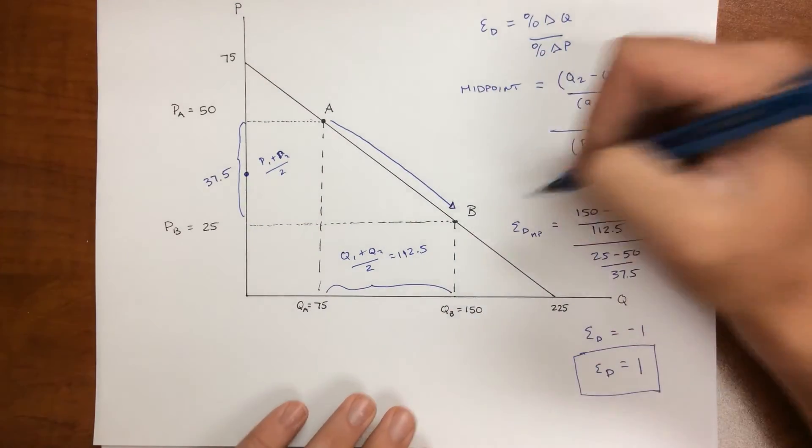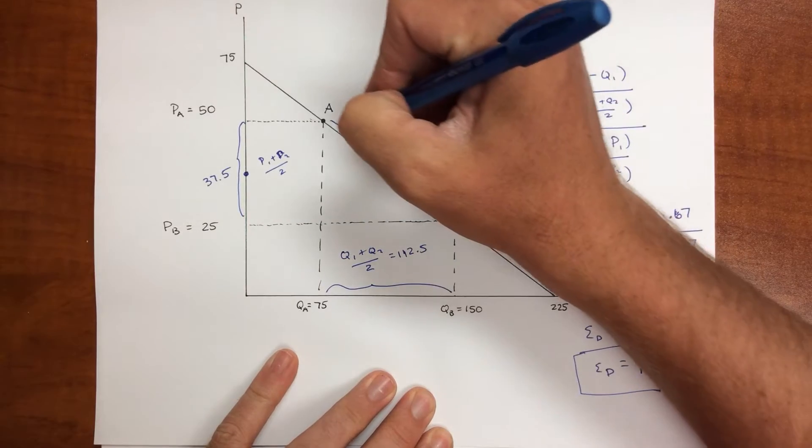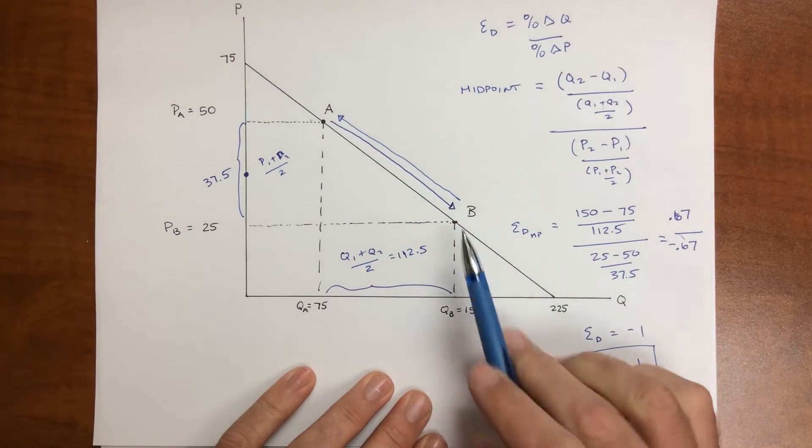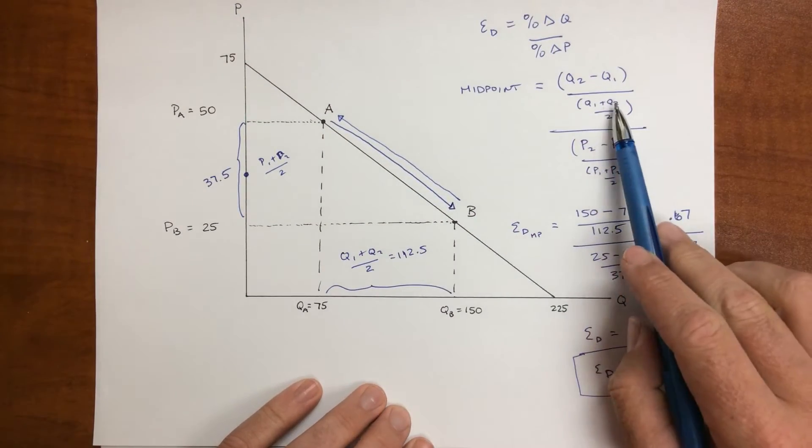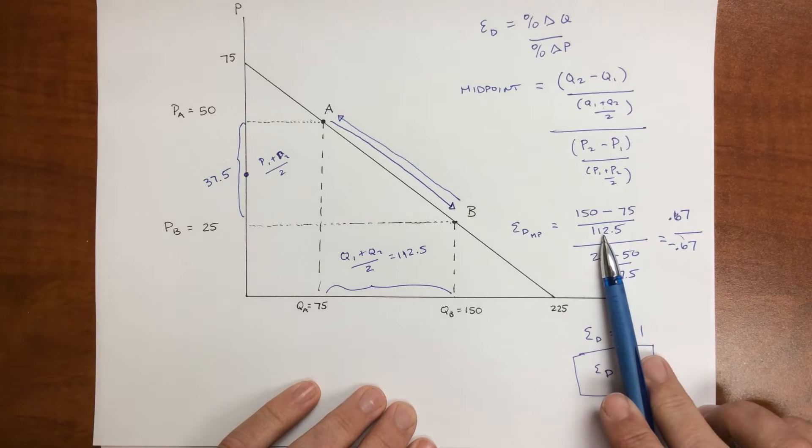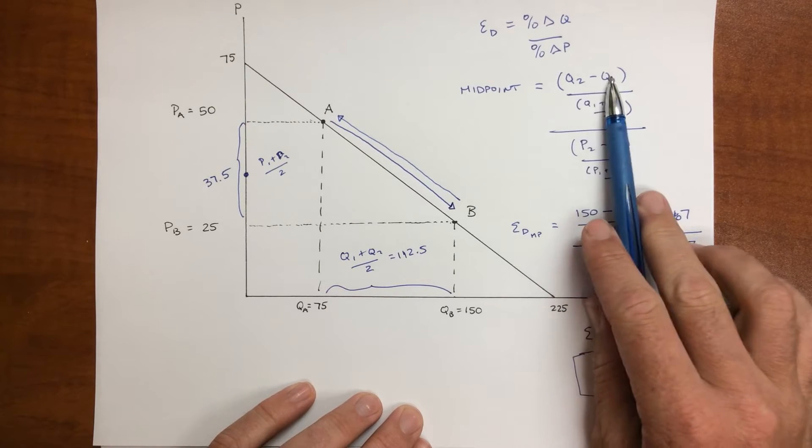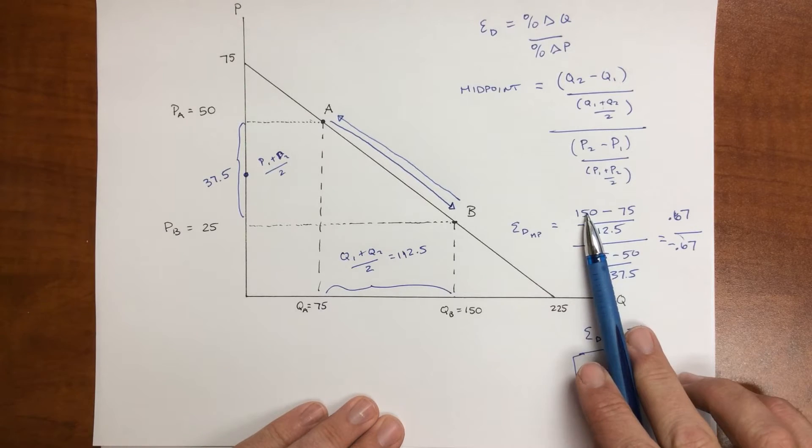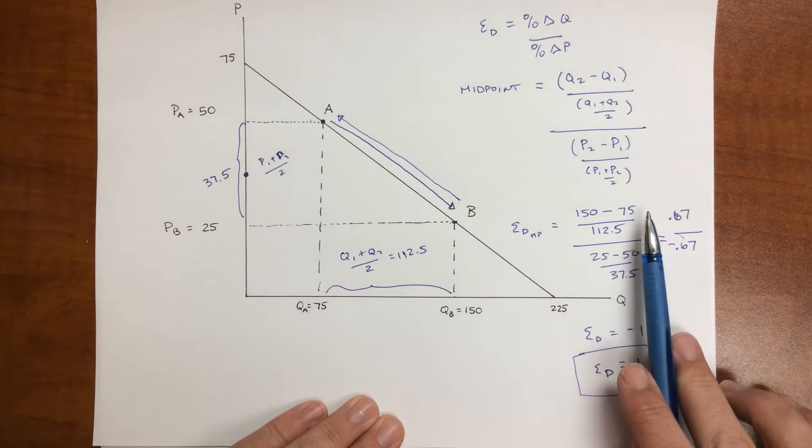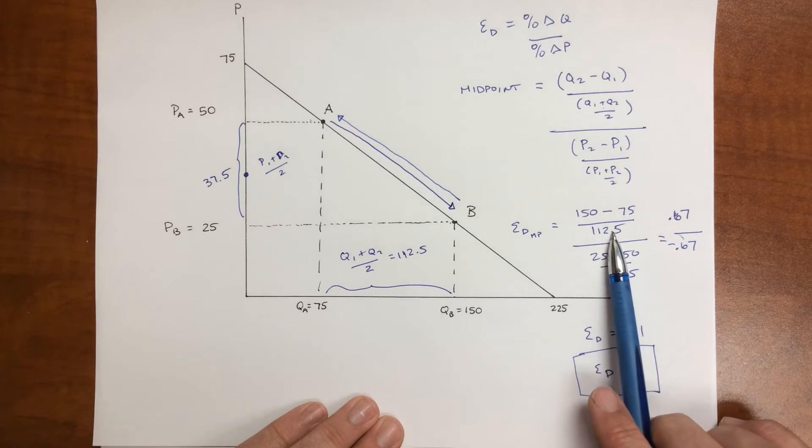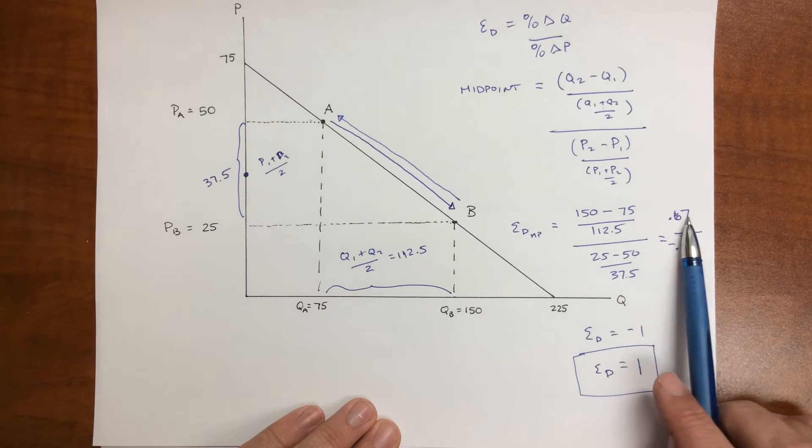Now if I want to find the elasticity of demand from going from point B to point A, it's the exact same equation. Because Q1 plus Q2 doesn't change, so 112.5 will stay the same, and all that's going to switch are these two numbers. So it's now going to be 75 minus 150, which is still 75 divided by 112.5. It's just negative 0.67.